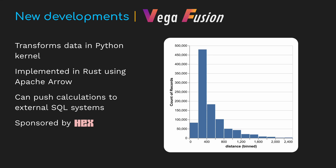I want to highlight two new developments that are coming soon. The first is integration with VegaFusion — a library I've developed that provides efficient Rust implementations of Altair's data transformations. This makes it possible to scale Altair visualizations to millions of rows, as long as they include some form of aggregation. VegaFusion can also push transform calculations to external SQL systems like DuckDB, with other database systems in the works. VegaFusion's development is sponsored by my employer, Hex.